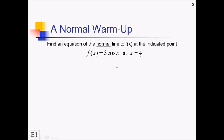All right, let's see how that went. First off, what is a normal line? This is a line that is perpendicular to a tangent line, but also goes through this same point at x equals π/2. So whatever the slope of the tangent line is, we're going to have to take the opposite reciprocal of that to get the normal line.